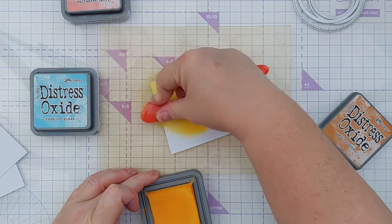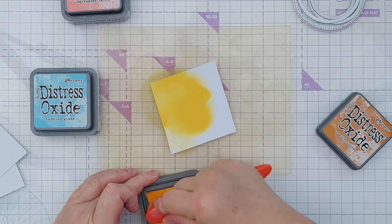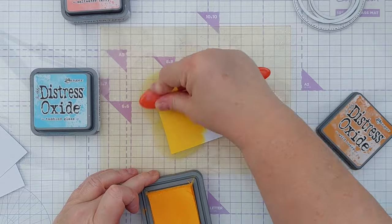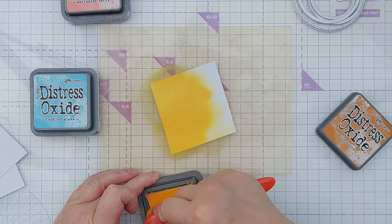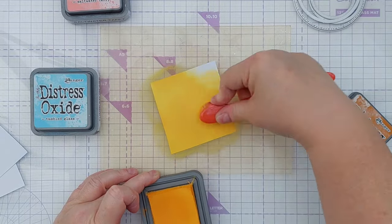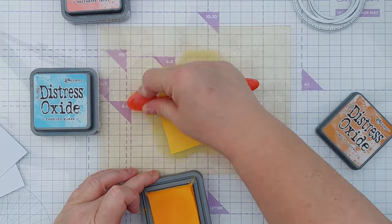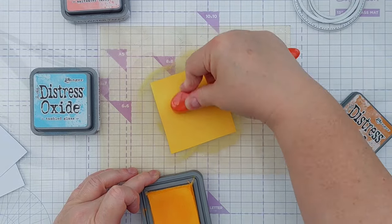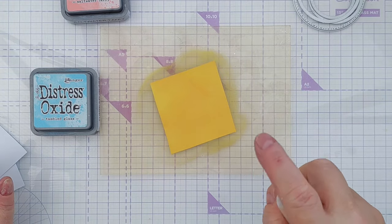I then did another square of smooth white card with wild honey distress oxide, one with tumbled glass and one with salt water taffy. I also gently misted each piece of card with some white shimmer spray.